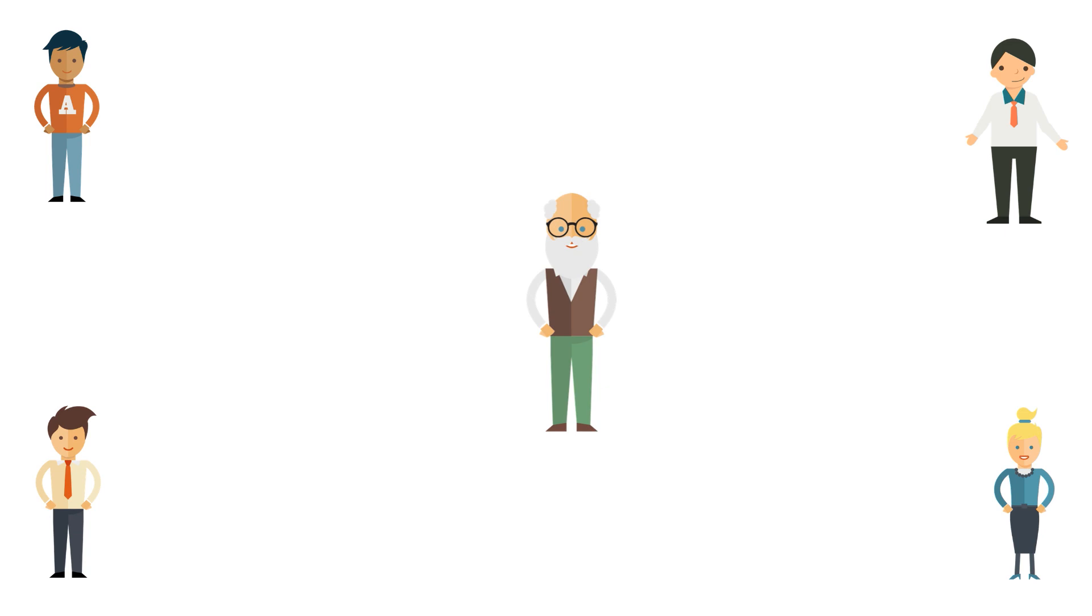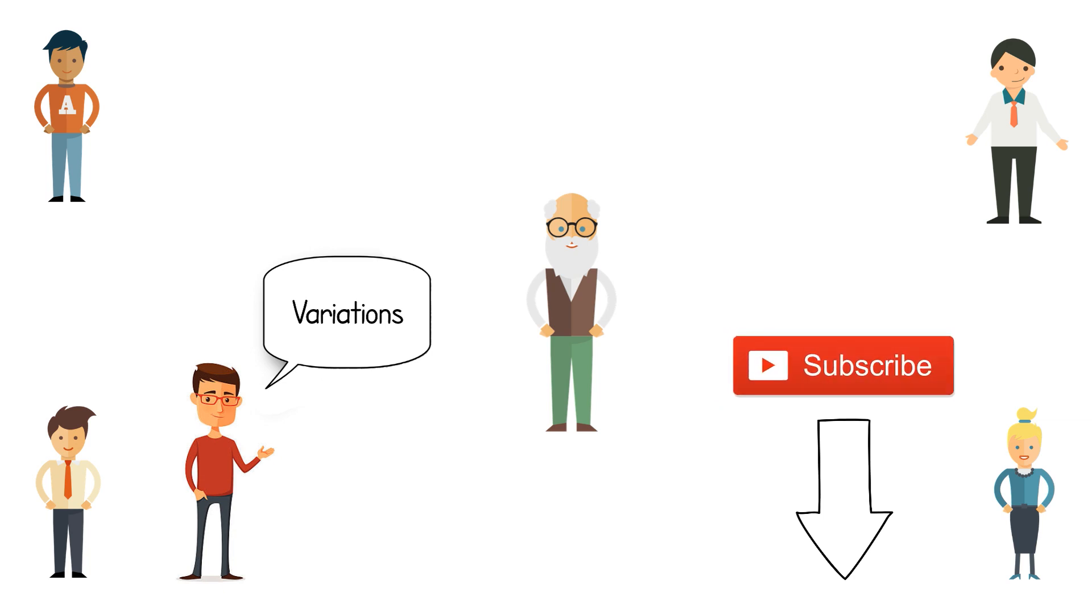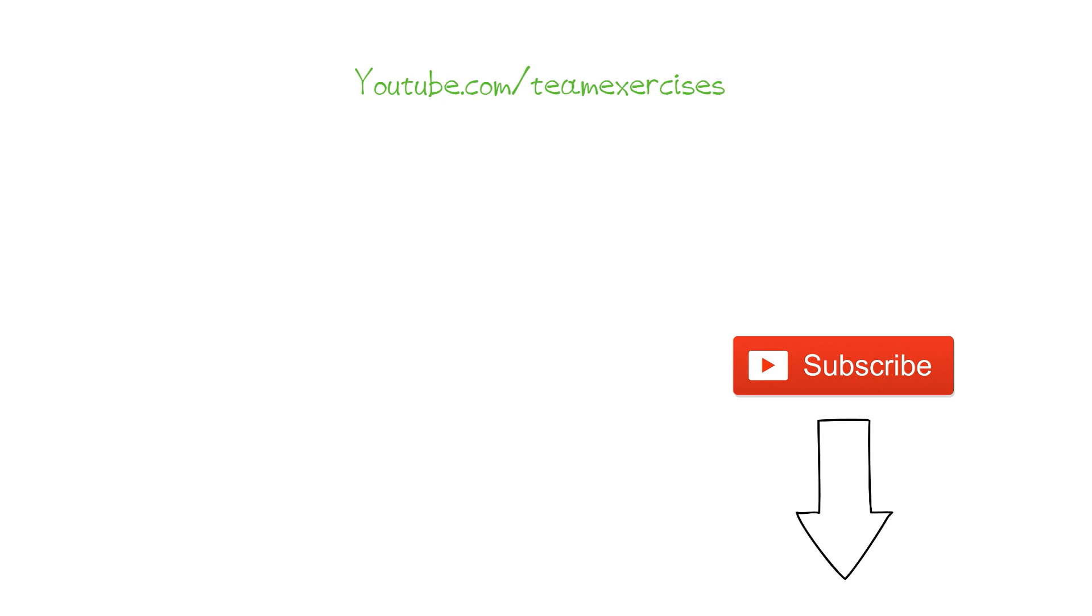You can come up with a fun thing for him to do, for example sing a song or come up with the next exercise. The trainer guides the team and applies variations to the exercise. What kind of variations you can read below this video on YouTube. And haven't you subscribed yet? Hit the subscribe button to stay tuned for a new team exercise each Sunday on youtube.com/teamexercises to improve cooperation and communication.